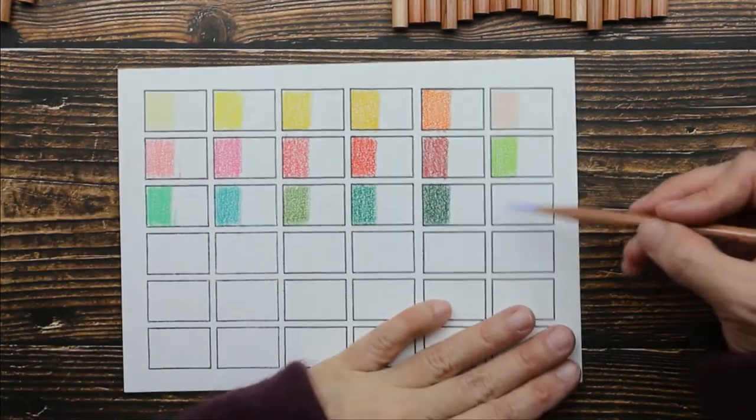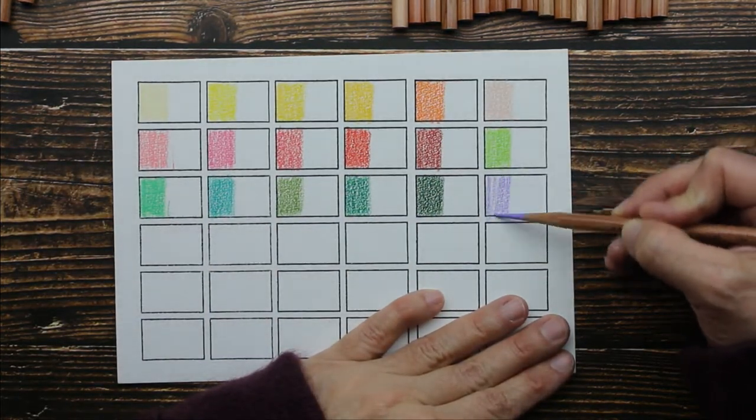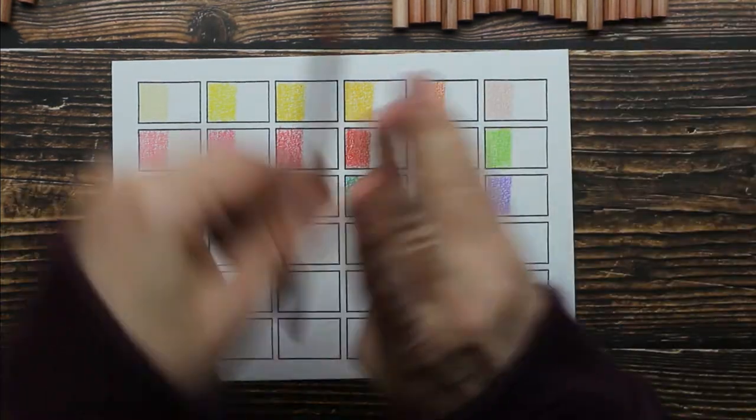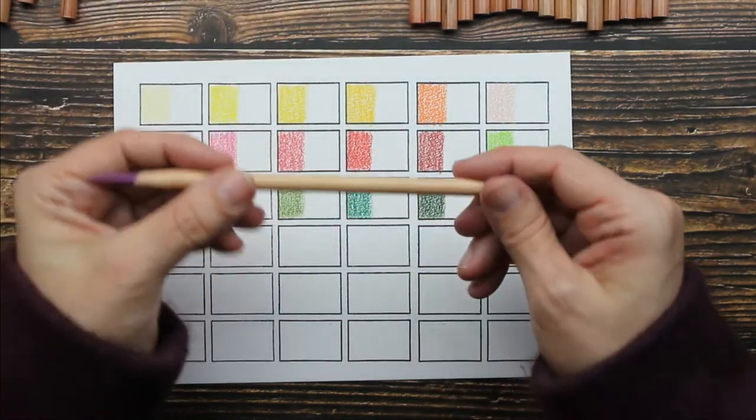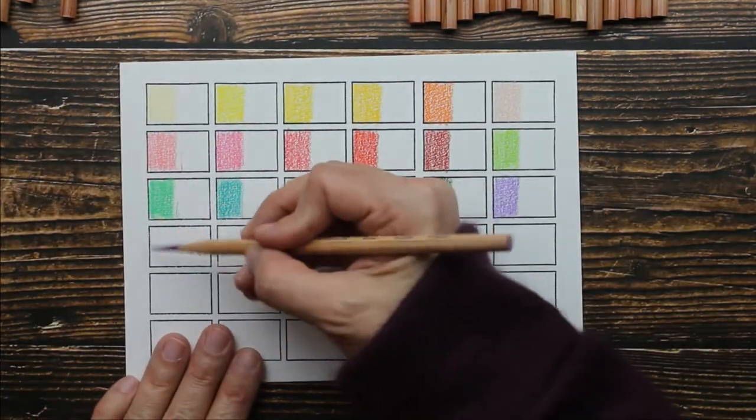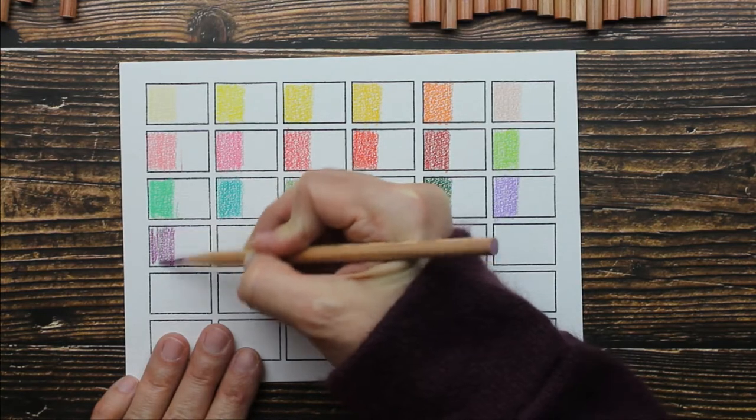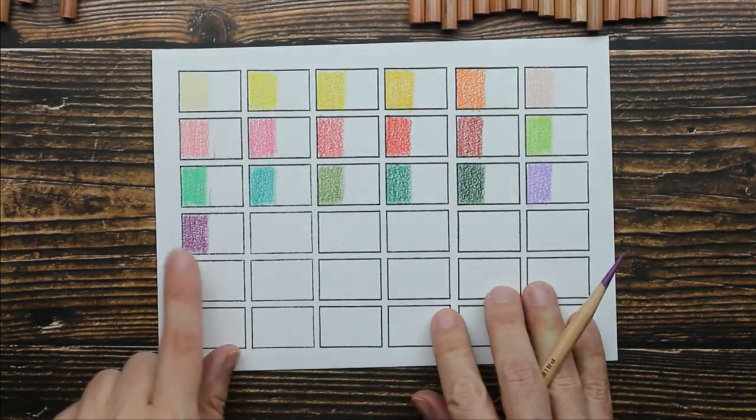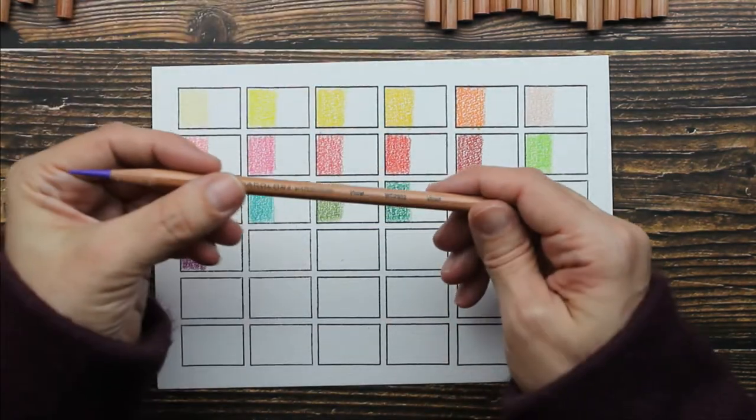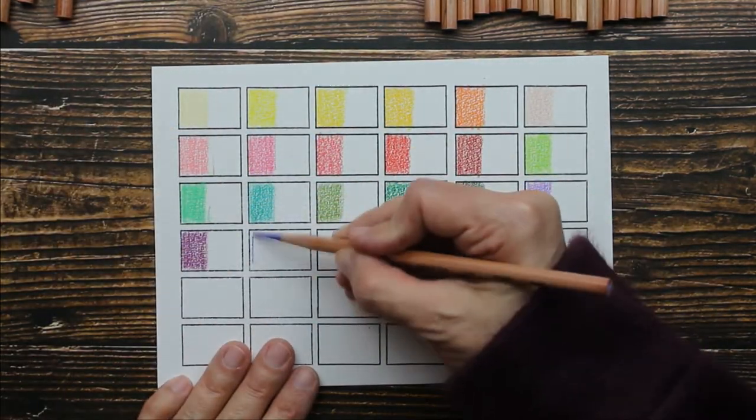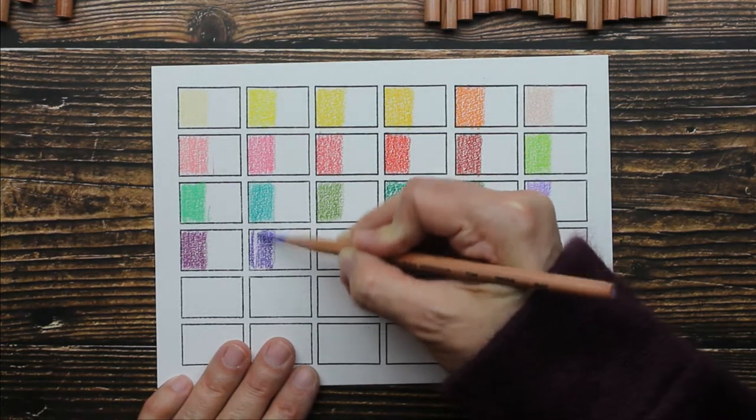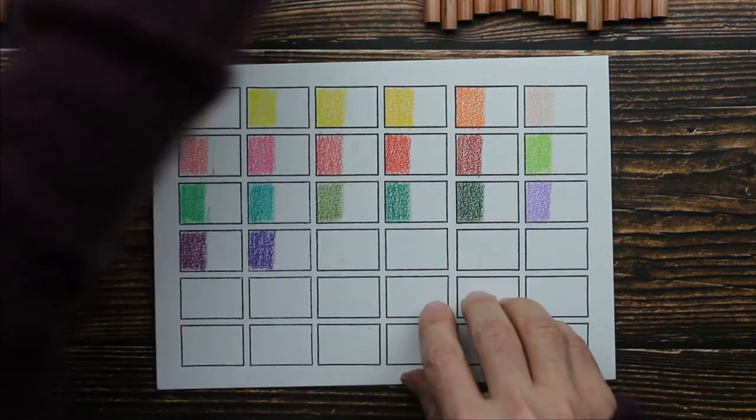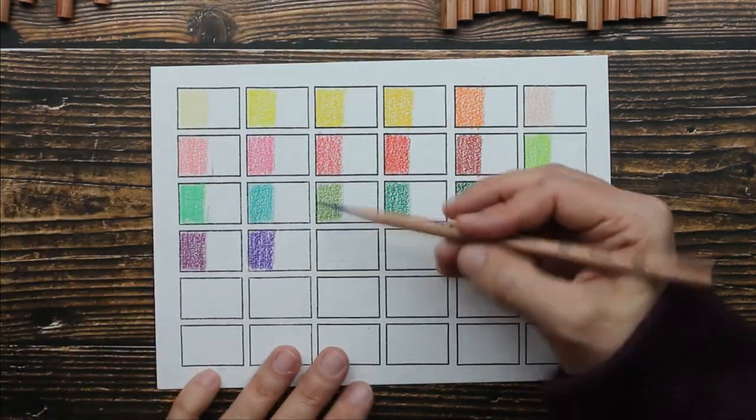This is Lilac, but you can use these guys with your Prismacolors. The colors match the Prismacolors regular pencils. This is Mulberry. That's a really beautiful color. Then we have Violet.